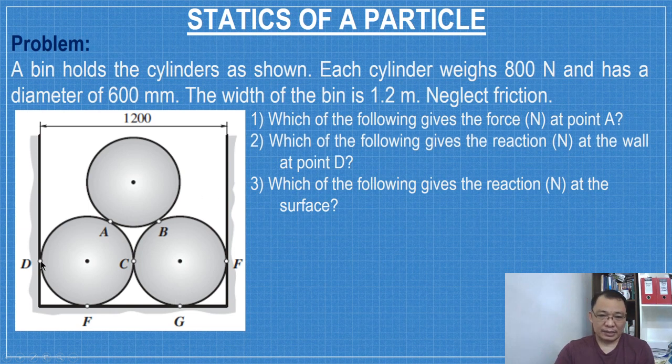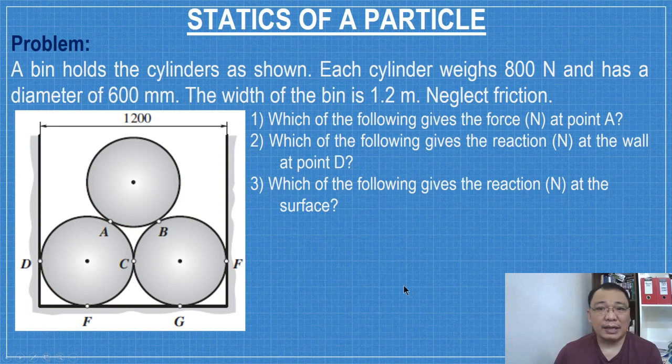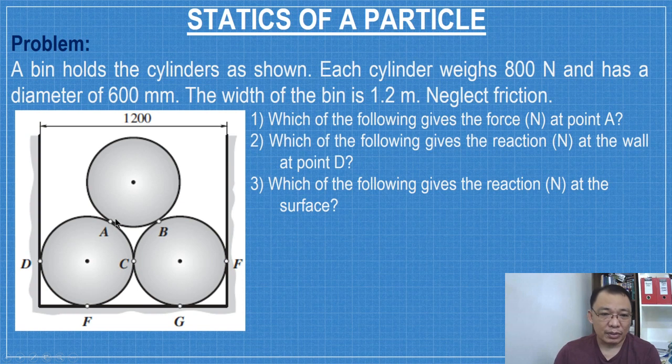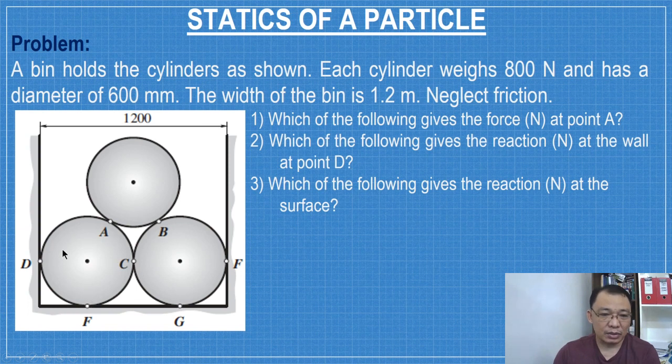The number three reaction at the surface refers to either F or G. Since the number two is reaction at D, the number three is reaction at F. Since the particle, although this is a rigid body, the analysis is considered a particle because the forces meet at a common point. The analysis here is to analyze per cylinder and you start with the highest one.